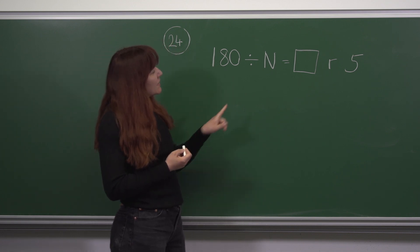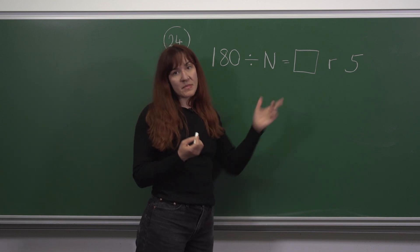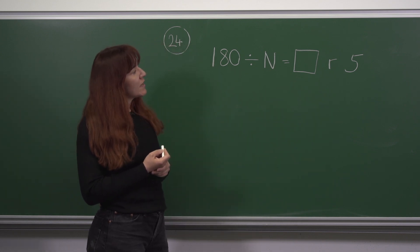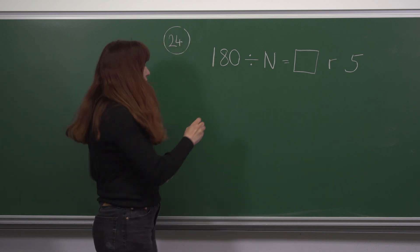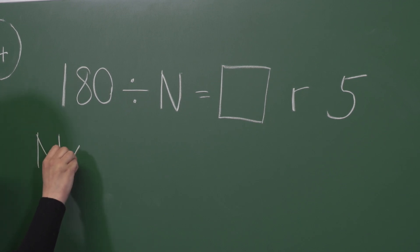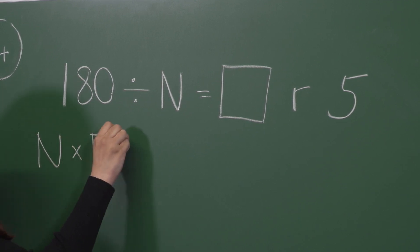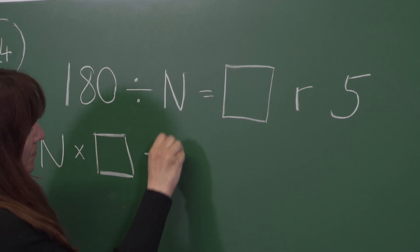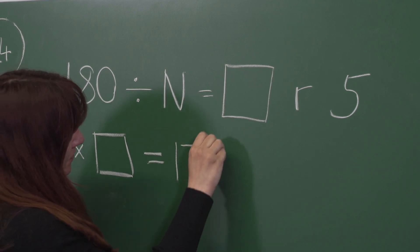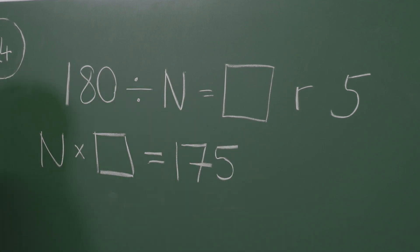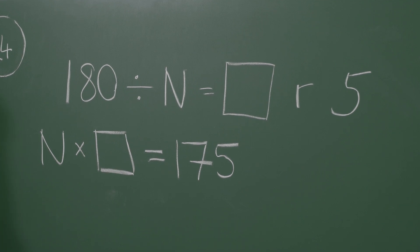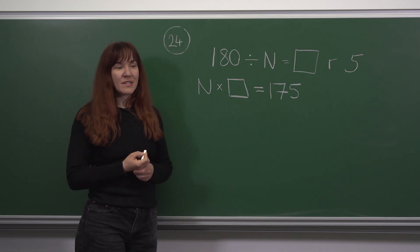If you think about it, we can see that n times this number that we don't know would multiply to 175. From this, we know that n has to be a factor of 175. Let's find the factors of 175.